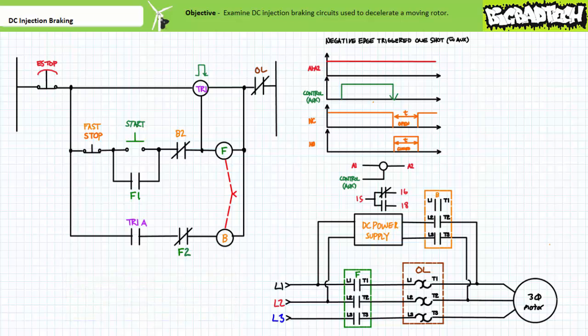Really, the only difference between this implementation making use of a negative edge triggered one-shot and our previous one making use of an off-delay timer is that contact TR1A does not remain closed while the motor is running but only closes when in the process of deceleration. Regardless of the timer function employed, the electrical interlock provided by contact F2 in the activated open state while in run mode would keep the B contactor coil from energizing.